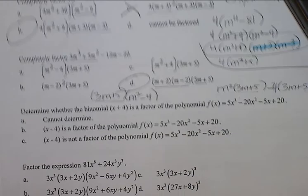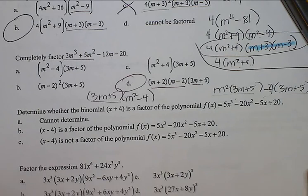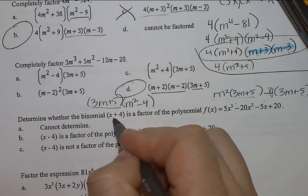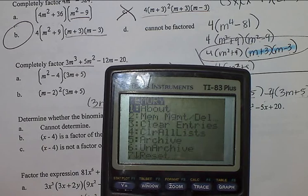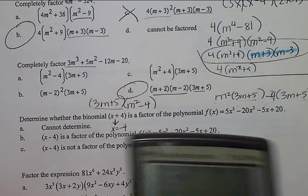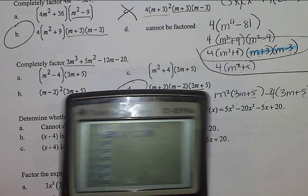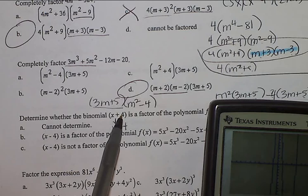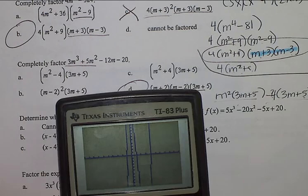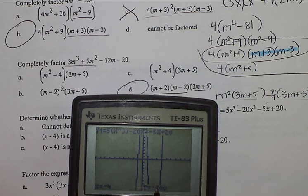Go ahead and answer the next one. Determine whether the binomial x plus 4 is a factor of the polynomial. So if this is true, if this is a factor, then the solution or the x-intercept x equals negative 4 will be an x-intercept. So let's plug this in. We have 5x raised to the third power, minus 20x squared, minus 5x plus 20. Let's graph it. We want to see is the factor x plus 4, which means negative 4 is a solution, a root, a 0, an x-intercept. So if I do second trace value and type in negative 4, we can see it is not. It is not a root.